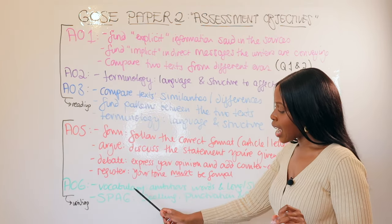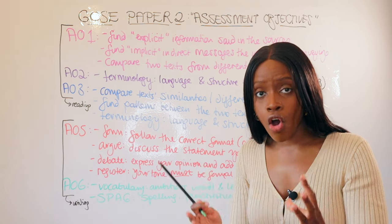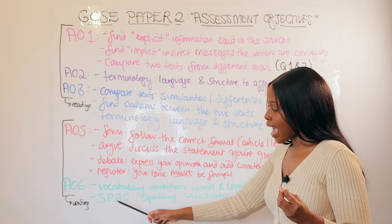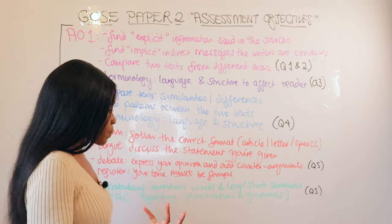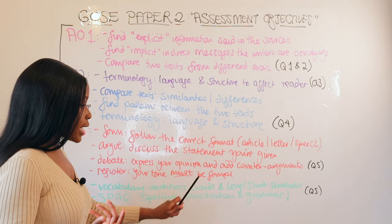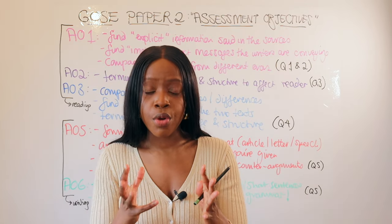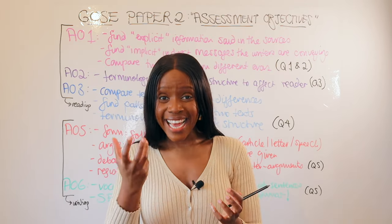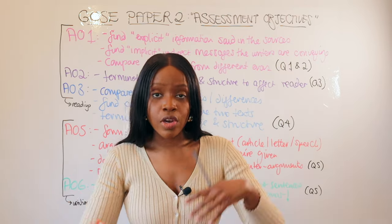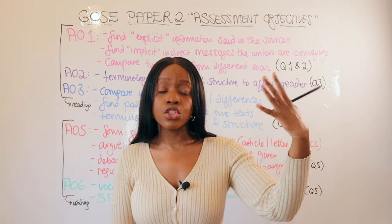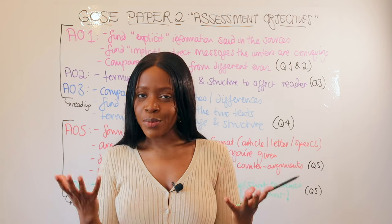The final AO is AO6, tested in question 5. Firstly, are you able to display a vast and wide range of ambitious vocabulary? Secondly — and really importantly — AO6 covers your SPAG points: spelling, punctuation and grammar. That's really it when it comes to assessment objectives. Remember, it's really important to know them because they are the aim of the game. When you're sitting your language paper 2 GCSEs in June, you need to be hitting all those different AOs. Thanks so much for listening and I hope this helped.